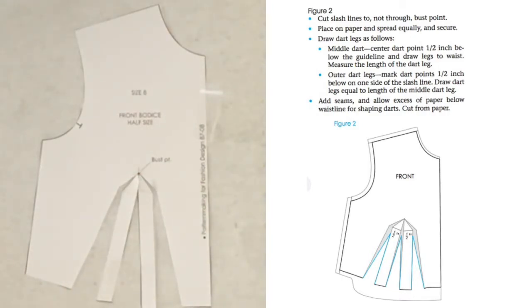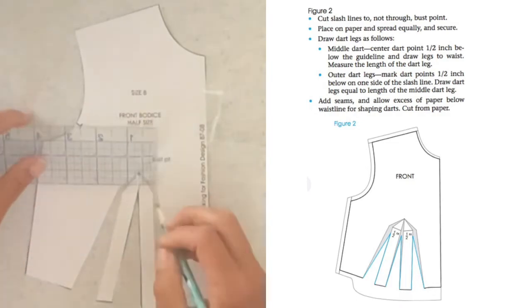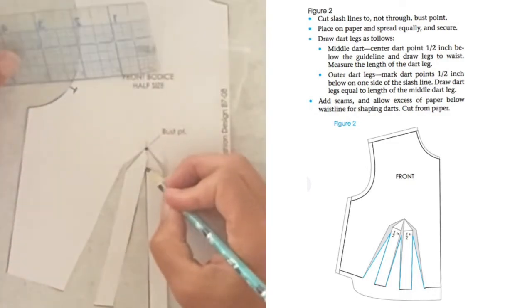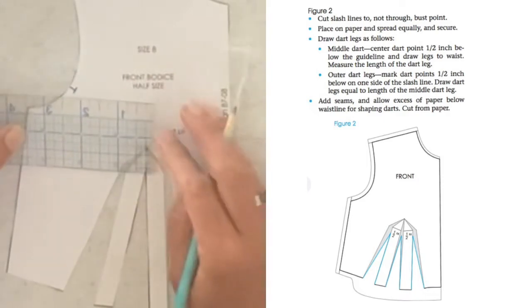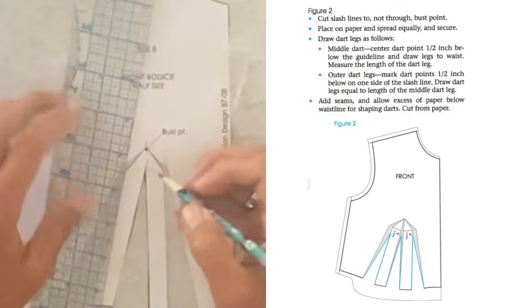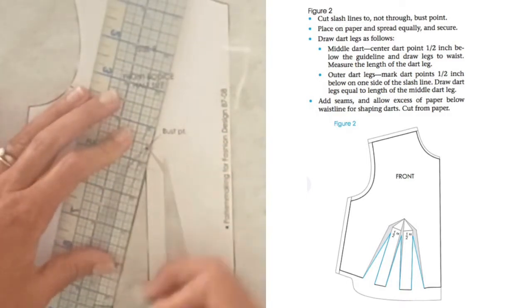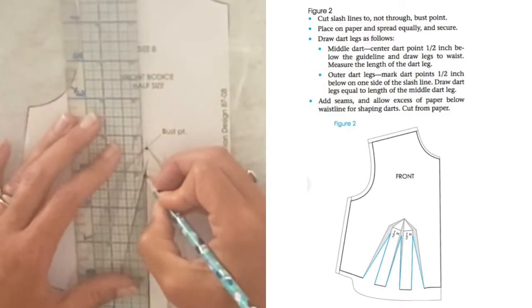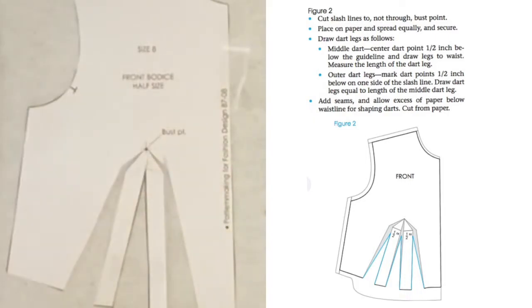Draw the dart legs as follows. The middle dart—they want us to center our dart point half an inch below our guideline, then draw the legs to the waist. So half of half an inch would be one-fourth inch. This was our guideline that we originally drew, so I'm just going to do a quarter inch, and then I draw the dart legs just to match each one.